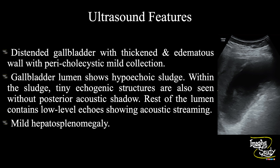In summary, a distended gallbladder with thickened and edematous wall is seen with pericholecystic mild collection. The gallbladder lumen shows hypoechoic sludge, and within the sludge there are tiny echogenic structures without posterior acoustic shadow indicating microcalculi or soft calculi. The rest of the lumen contains low-level echoes showing acoustic streaming, indicating a pus component. There is also mild hepatosplenomegaly. These features conclude this as a case of acute cholecystitis with soft calculi or microcalculi, biliary sludge, and features of empyema gallbladder.